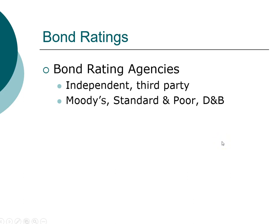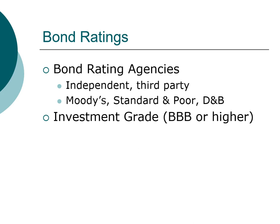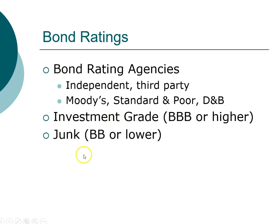Bond rating agencies give ratings ranging from triple-A, double-A, single-A, then down through triple-B, double-B, single-B, C, and so on. An important classification is investment grade: any bond rated triple-B or higher is considered investment grade. Any bond rated double-B or lower is considered a junk bond. Junk bonds go by many names — they are also called speculative bonds or high-yield bonds, so be sure you know all the various names attributed to this type of investment.